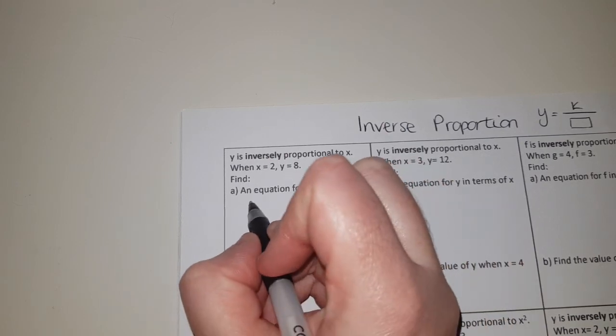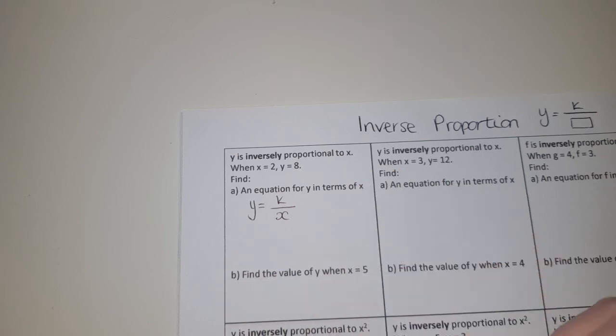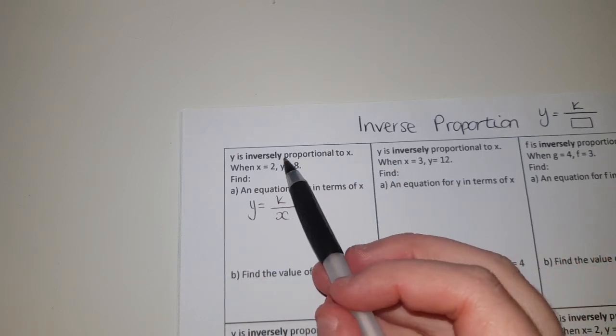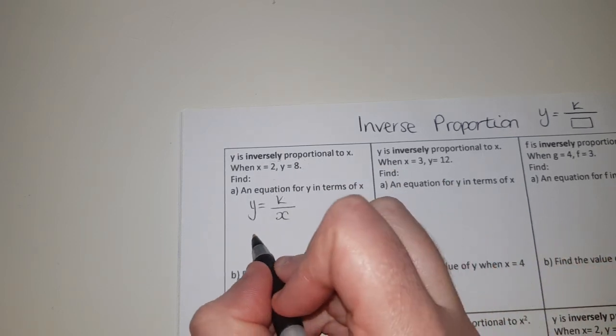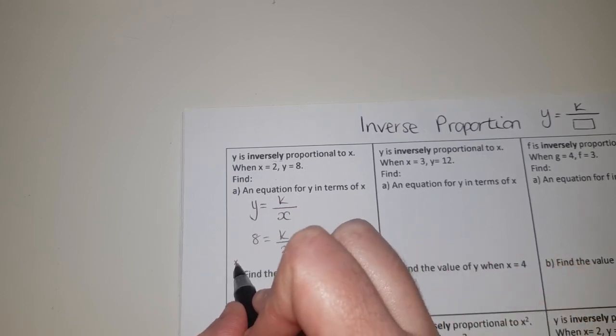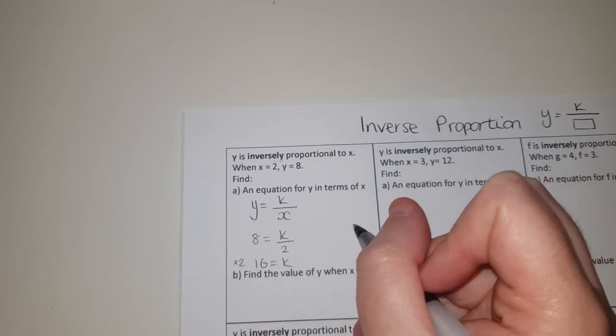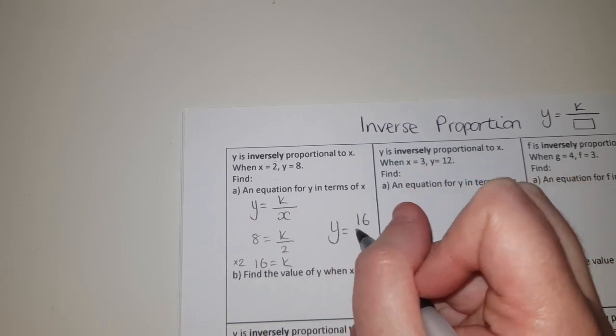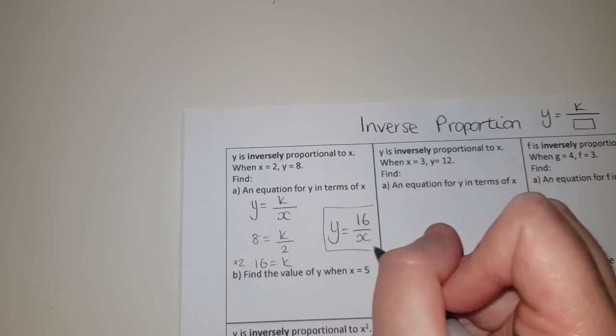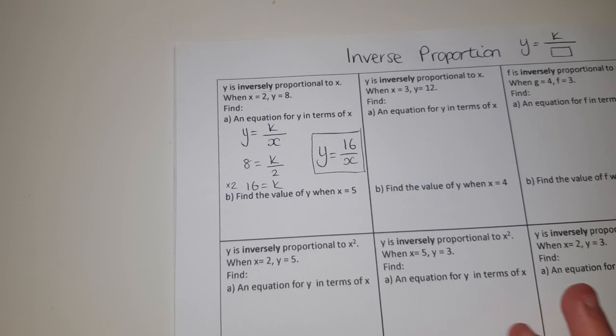So inverse proportion is always in the format k over something. What we've got here is inversely proportional to x. It means y is equal to k over x. Again we do exactly what we did last time, we're substituting our numbers. So 8 is equal to k over 2. If I times by 2 I get k has to be 16. So my equation linking them is y equals 16 over x.